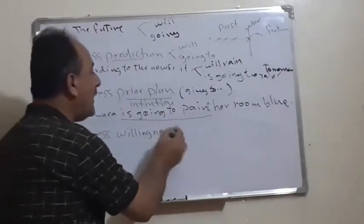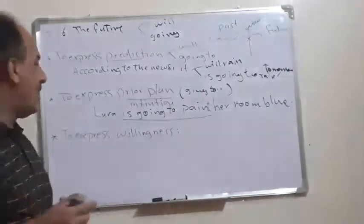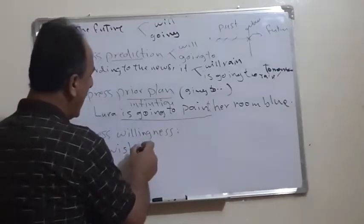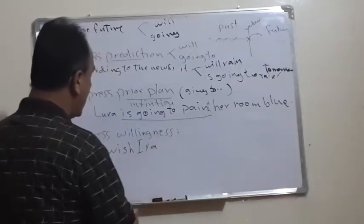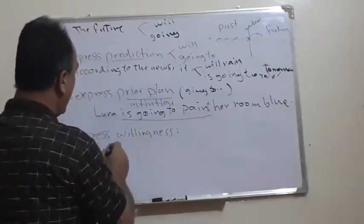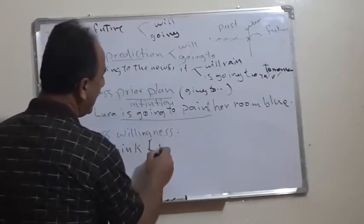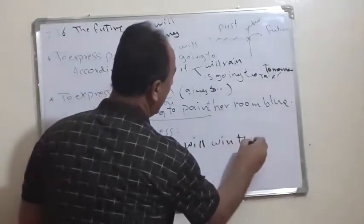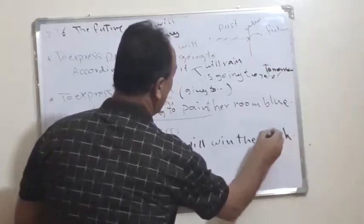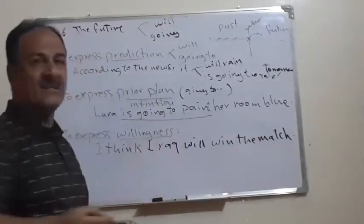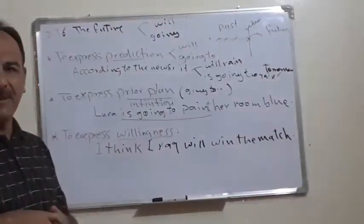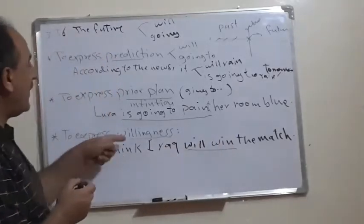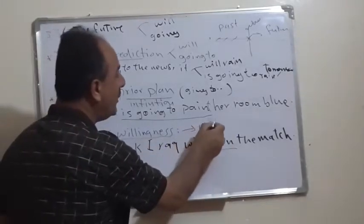Or if the sentence has a meaning of willingness — meaning we wish or desire something — for example: 'I think Iraq will win the match.' Here it has a meaning of willingness or desire, that we wish something to happen in the future. In the case of willingness, we use only the form 'will.'